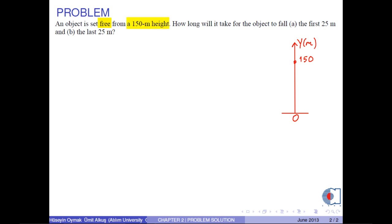An object is set free from a 150 meter height. How long will it take for the object to fall (a) the first 25 meters and (b) the last 25 meters?